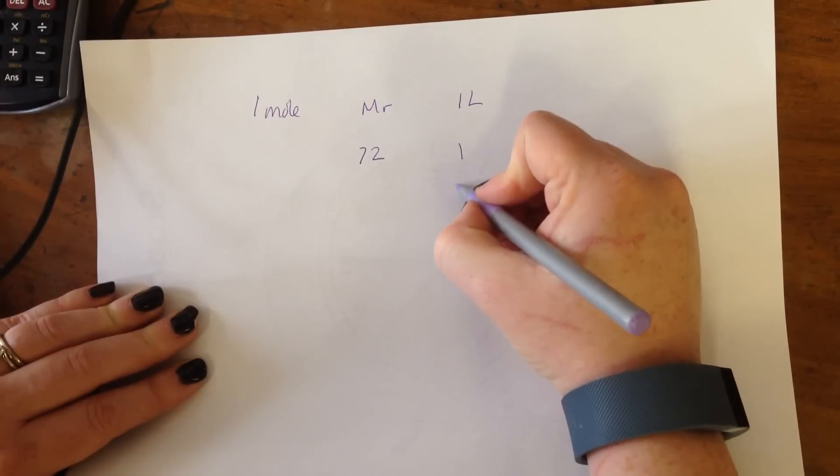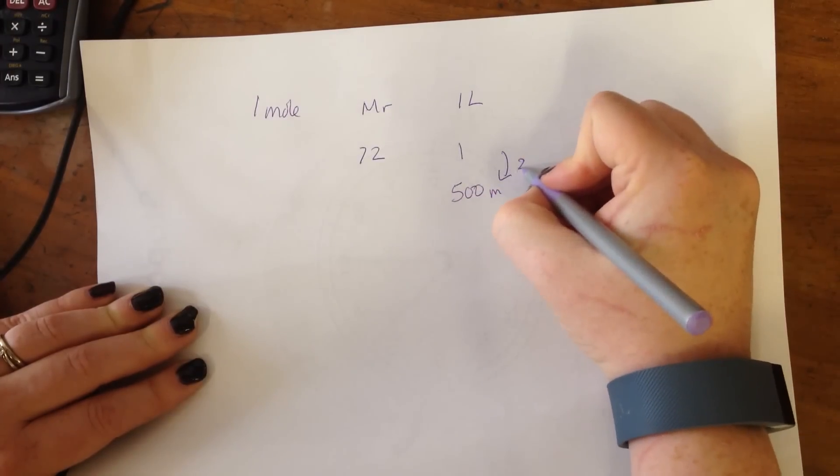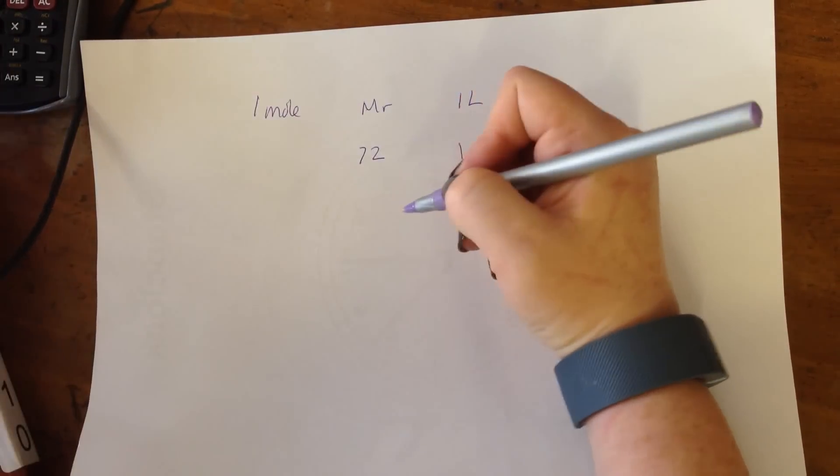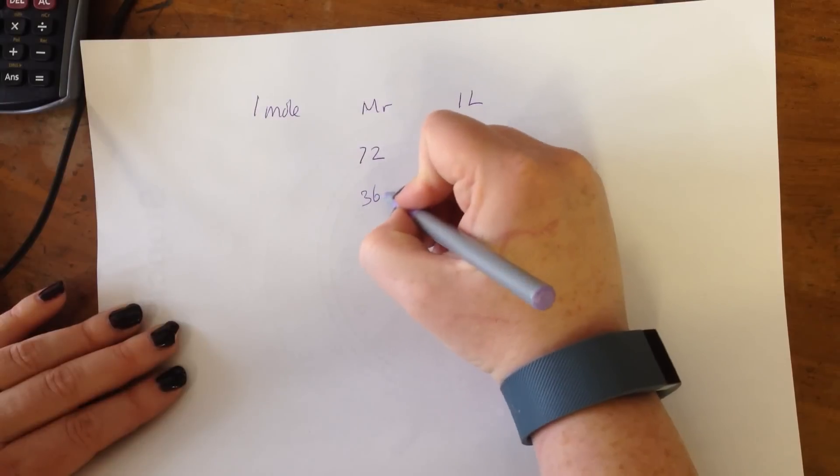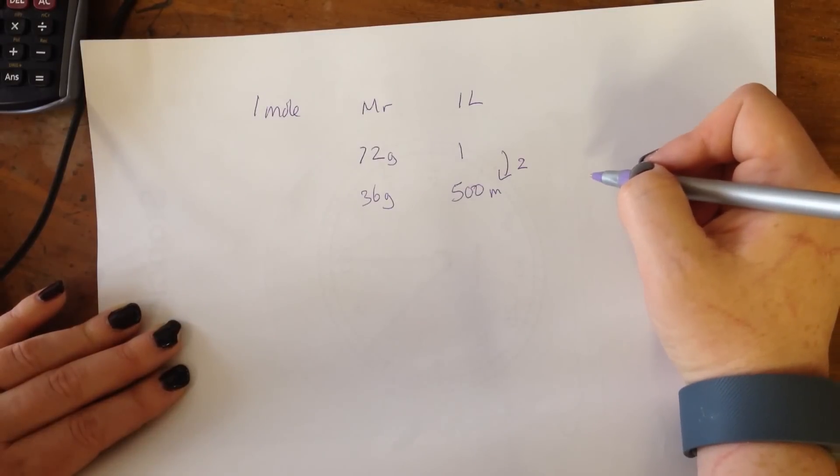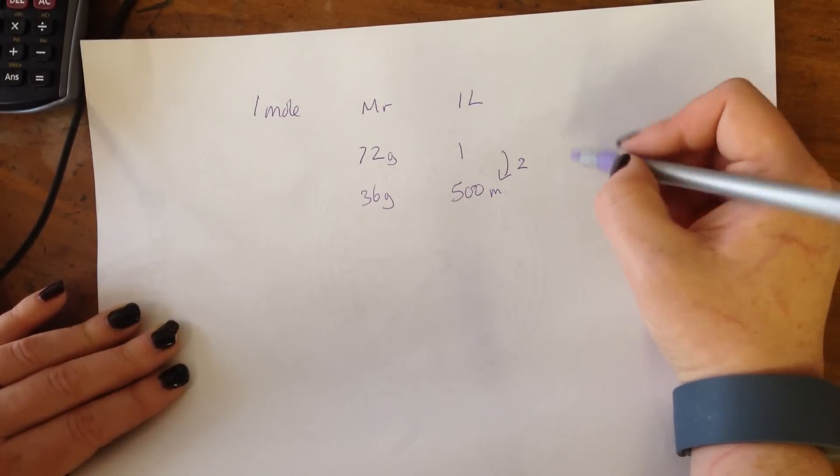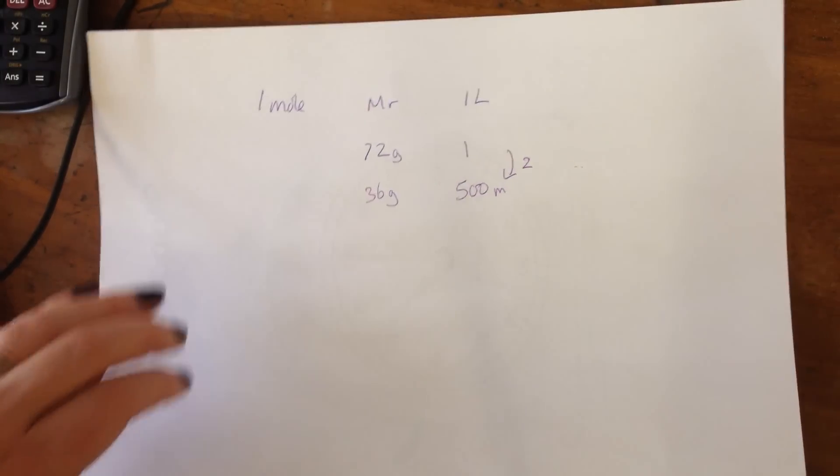If I wanted to have a 500 ml solution, you divide that by 2. So 72 divided by 2 equals 36 grams. And you can keep going like this, working out lots of different things. I'll come back to this later when we need to work out the actual amount that we need to use.